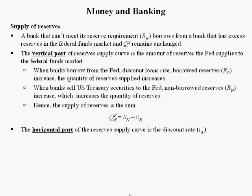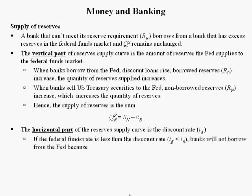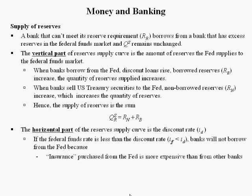The horizontal part of the reserve supply curve is the discount rate. The discount rate ID is the interest rate the Fed charges banks. Banks who can't meet the reserve requirement can either borrow from other banks or borrow from the Federal Reserve. If they borrow from the Federal Reserve, they pay an interest rate equal to the discount rate. When the Federal Funds Rate is less than the discount rate, banks will not borrow from the Fed because this insurance is more expensive than from other banks. So when the Federal Funds Rate is less than the discount rate, banks go to other banks.